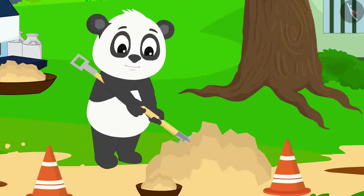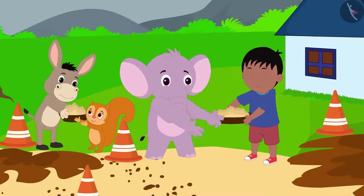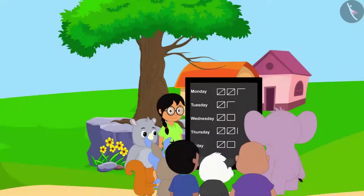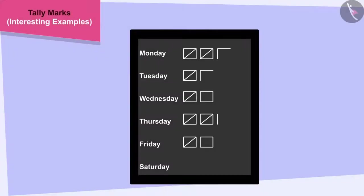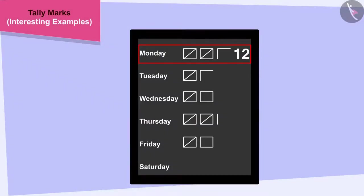One week got over and all the villagers worked hard and got the road fixed. All the villagers are eager to know on which day the most work was done. Children, can you look at this table and tell on which day the villagers have done the most work? If you wish to, you can find the solution by stopping the video.